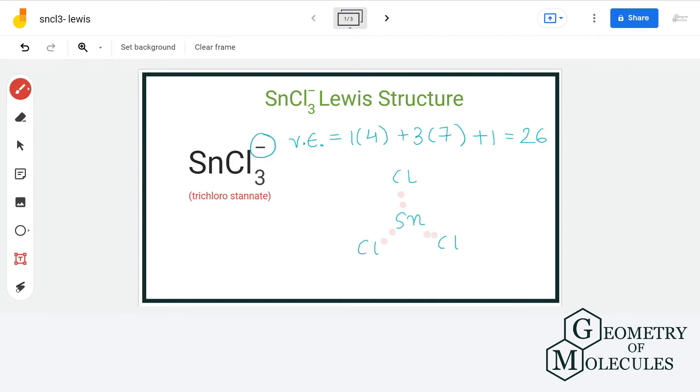As you can see, chlorine atom needs 6 more electrons for complete octet, so we will assign 6 electrons to each chlorine atom.